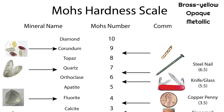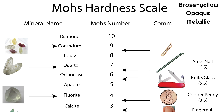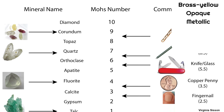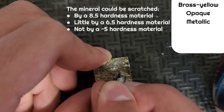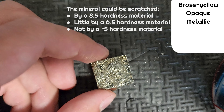The Mohs scale is what determines hardness, or how strong a mineral is. To test hardness, you can get a material of similar or weaker hardness and see if the mineral can be scratched. If the mineral can or cannot be scratched by the material, you can get a spectrum of the mineral's hardness.